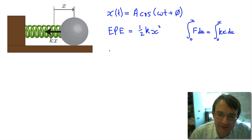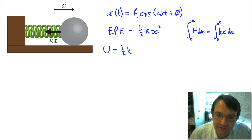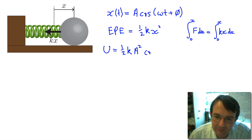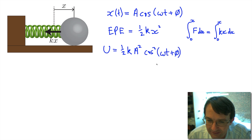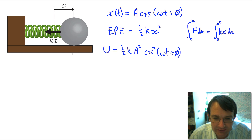To calculate the elastic potential energy — using the symbol U, which is commonly used for potential energy — all we have is ½k times this displacement function squared, giving us U = ½ka²cos²(ωt + φ). That gives us our expression for the potential energy. For a horizontal mass-spring system like this, the only potential energy is the elastic potential energy in the spring.